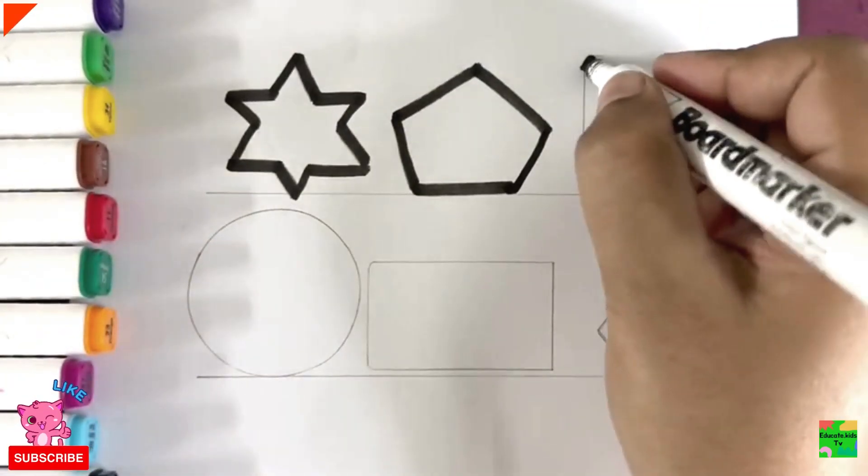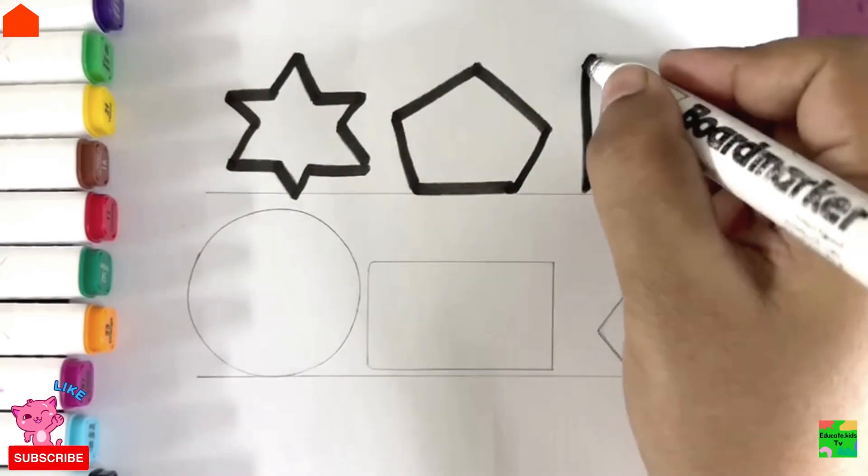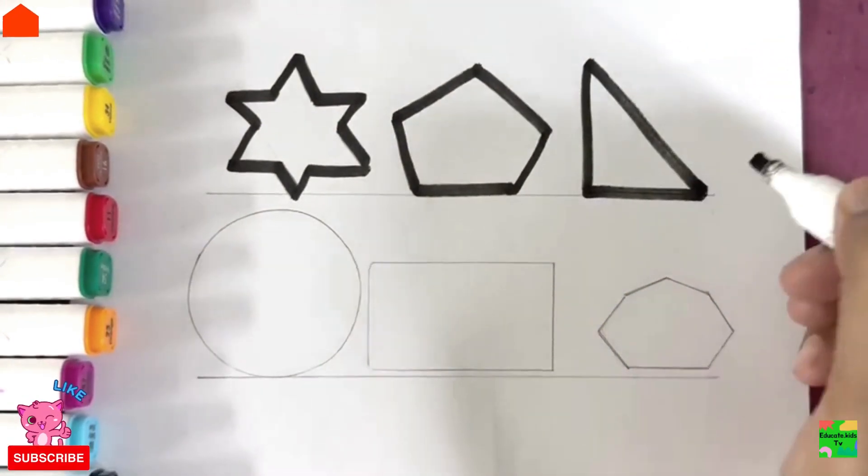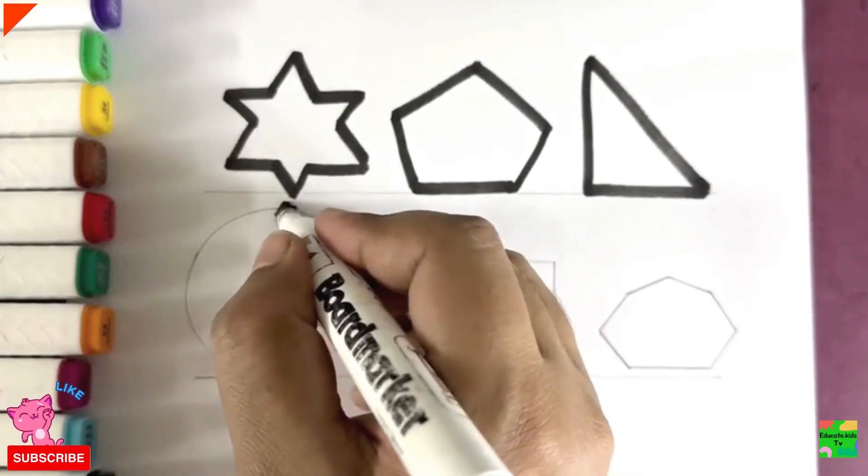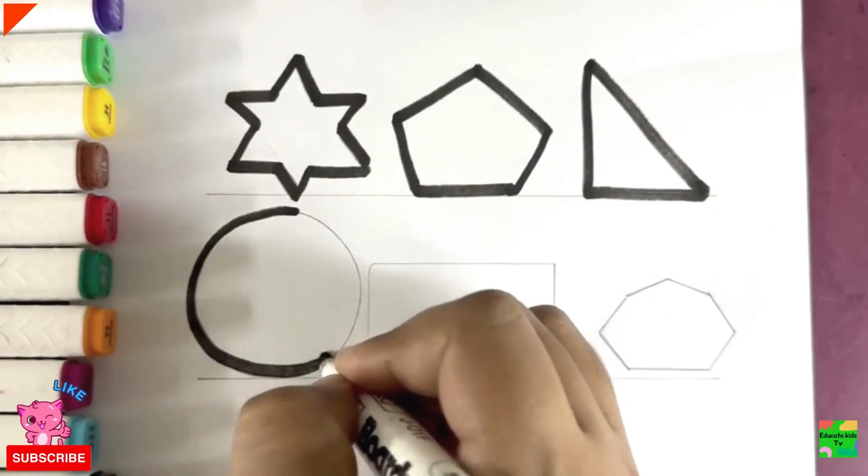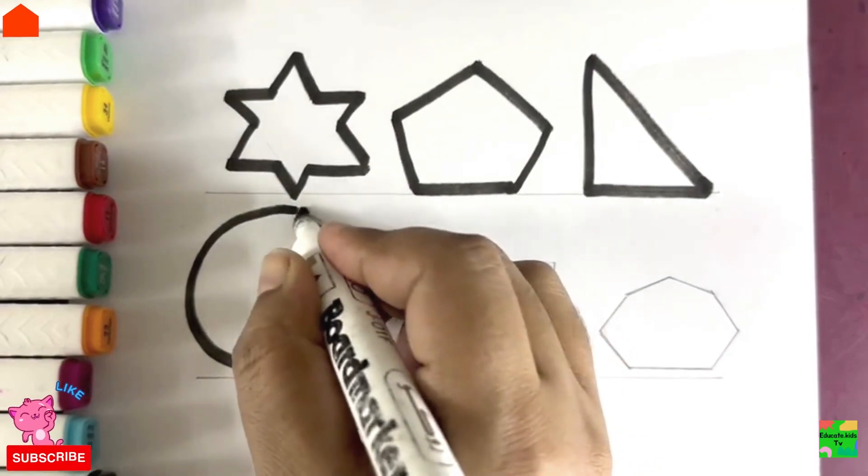Next is right-angled triangle. Wow! Now it's circle time. Hooray! Circle.